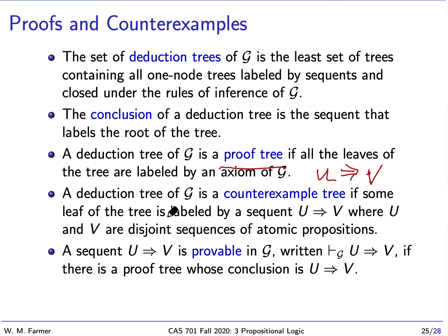A counterexample tree is a tree where some leaf is labeled by a sequent u arrow v, where u and v are disjoint sequences of atomic propositions. This sequent that labels a leaf of a node is going to have to have this form, where everything are atomic propositions. We don't have any connectives here, any Boolean operators. We say a sequent is provable if there is a proof tree whose conclusion is that sequent.